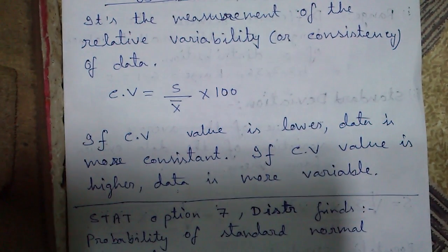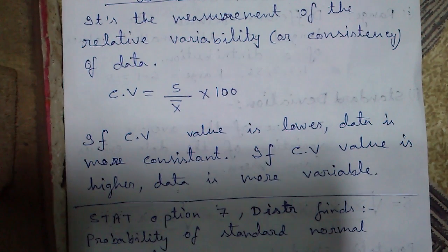So from the definition of coefficient of variation, we can say the x values are more variable or less consistent and y values are more consistent or less variable.